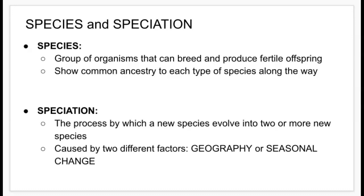A species will develop out of a population, and speciation is caused by two different factors: geography or seasonal change. An example of geography is the Galapagos finches, which were separated from the mainland and ultimately evolved into their own species of finches. Through adaptive radiation, they were also given different beak types.